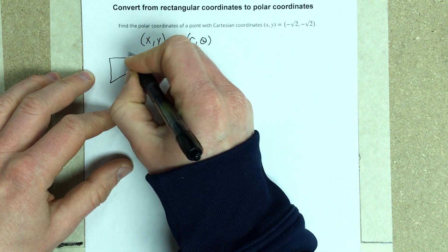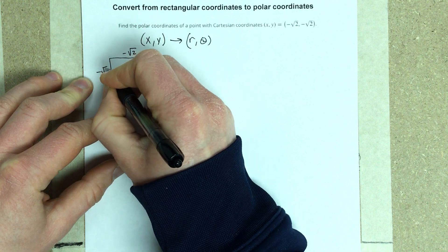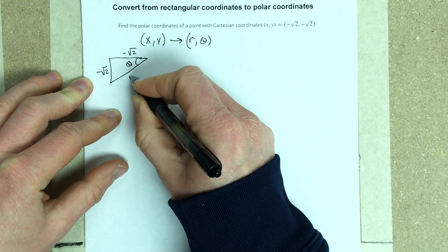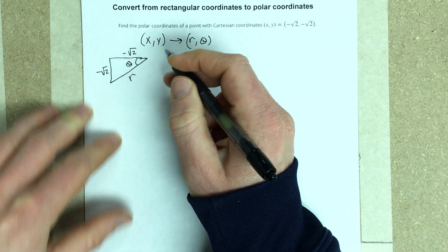And I have negative root 2 for x and negative root 2 for y. And I'm looking for theta and r, so I'm going to have to use some trigonometry to find that.